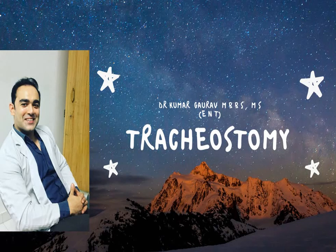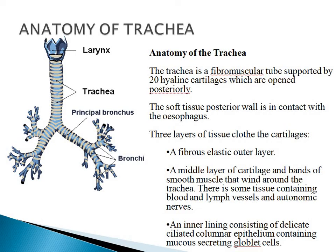The topic for today is tracheostomy. Let's start with the anatomy of the trachea. The trachea is a fibromuscular tube supported by 20 hyaline cartilages which are opened posteriorly. The soft tissue posterior wall is in contact with the esophagus. There are three layers: a fibrous elastic outer layer, a middle layer of cartilage, and bands of smooth muscles. The inner lining consists of delicate ciliated columnar epithelium containing mucus-secreting goblet cells.